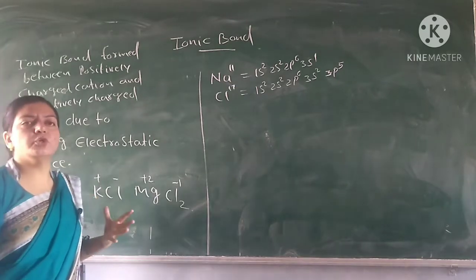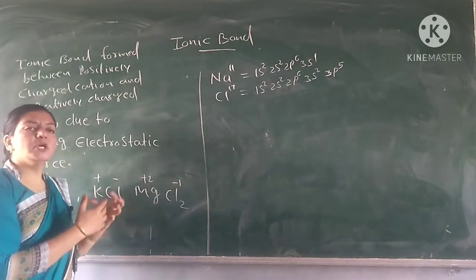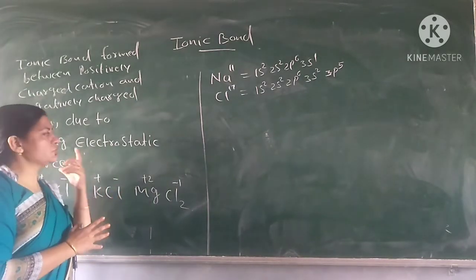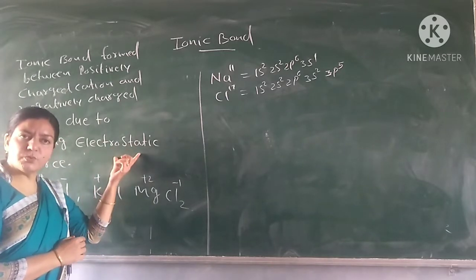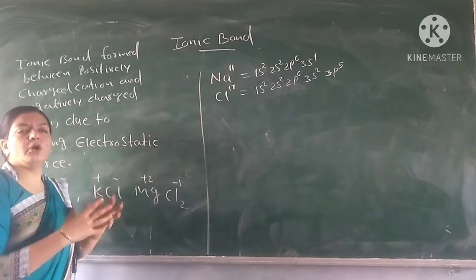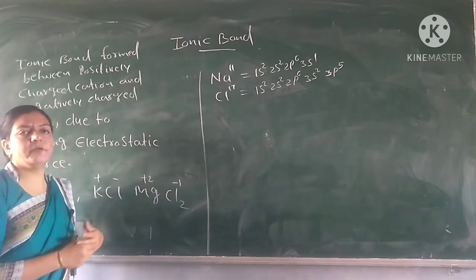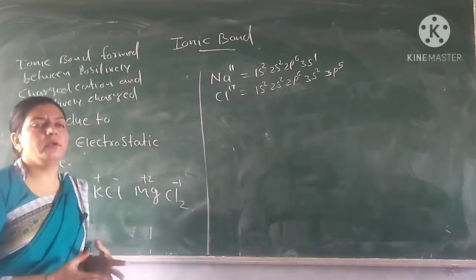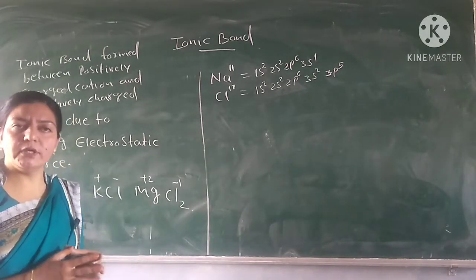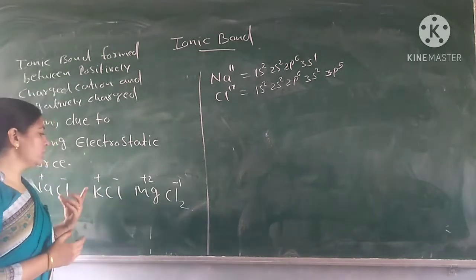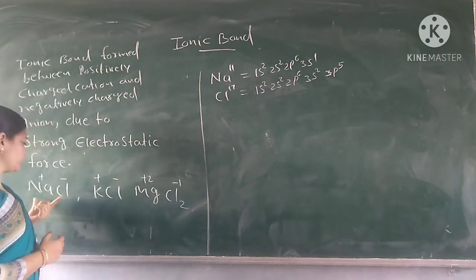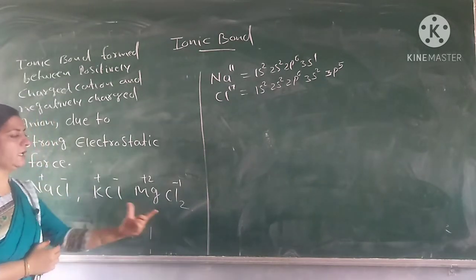Ionic bonds form between metals and nonmetals because of strong electrostatic force. Examples of ionic bond compounds include NaCl, KCl, and MgCl2.